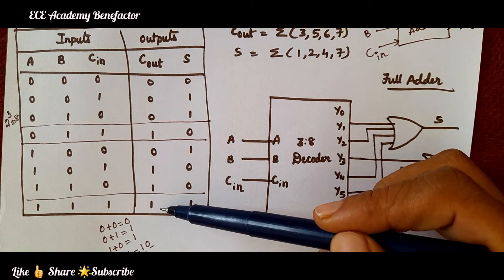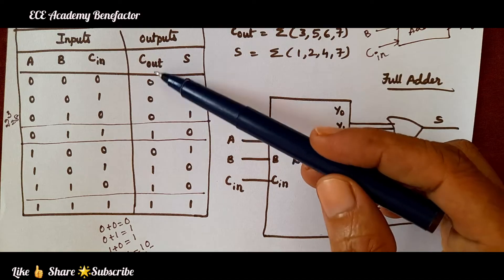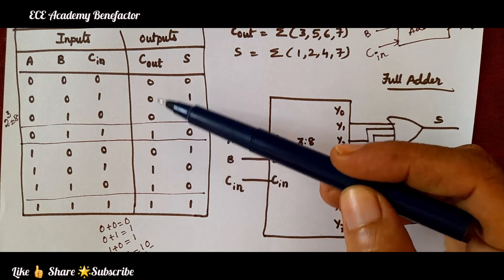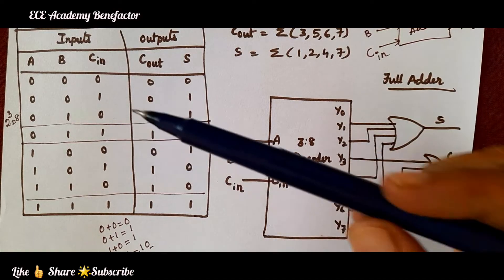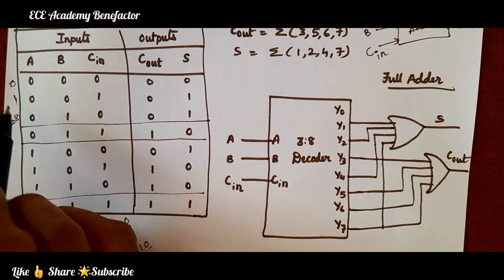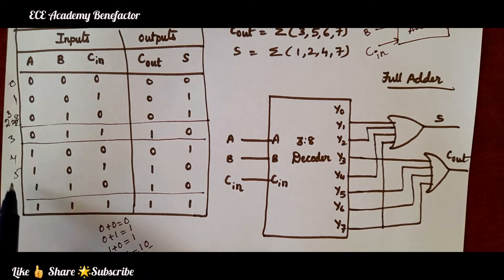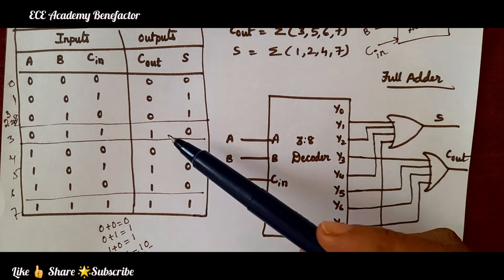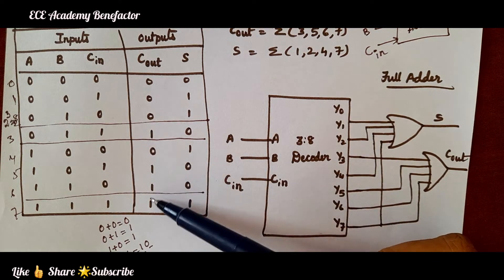After writing the truth table, we need to list the minterms of C-out — that is, where 1s are present. C-out is 1 at minterms 3, 5, 6, and 7. Similarly, sum S is 1 at minterms 1, 2, 4, and 7.